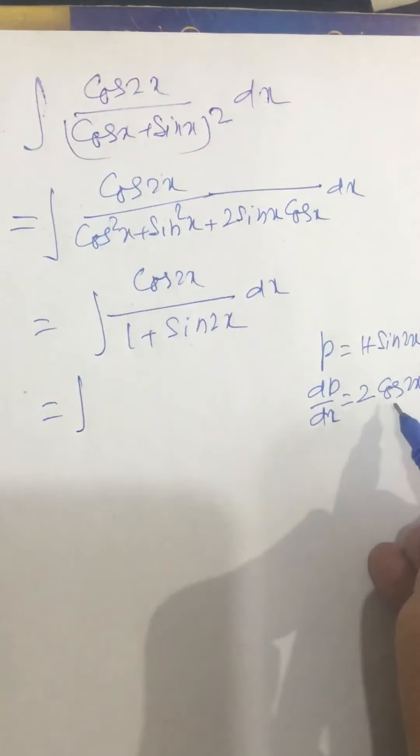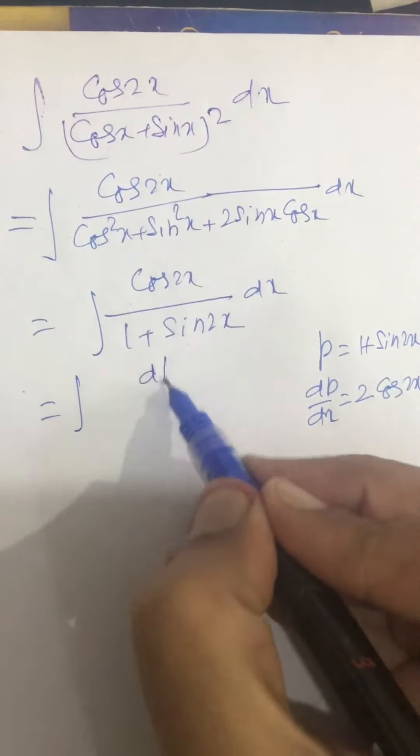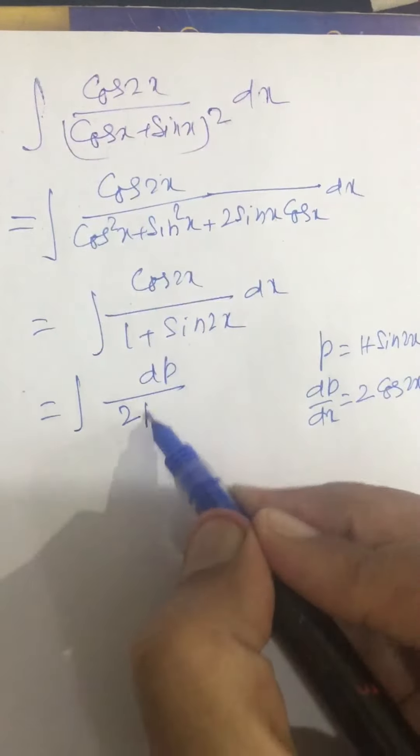So this we can write as cos2x dx is dp by 2, and 1 plus sin2x is p.